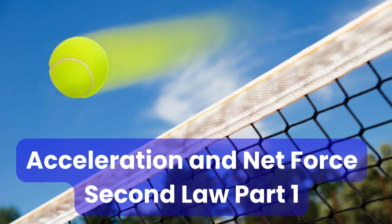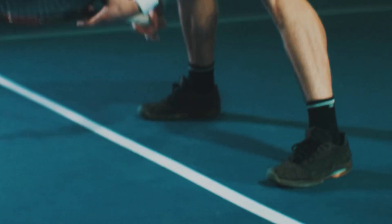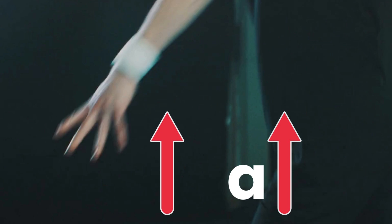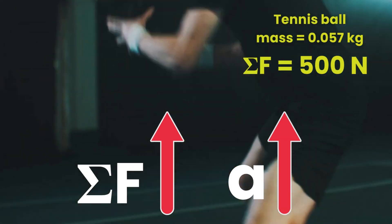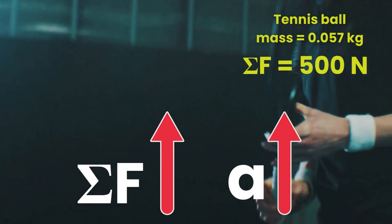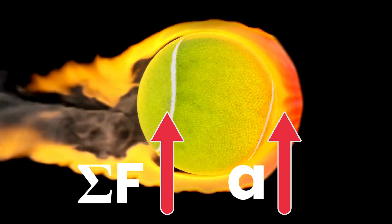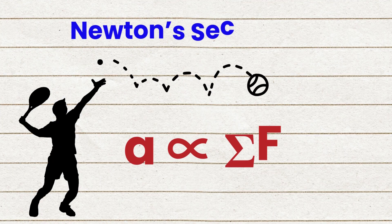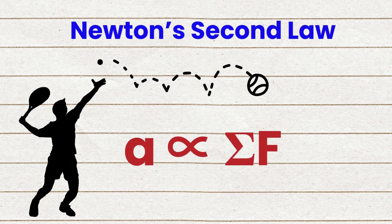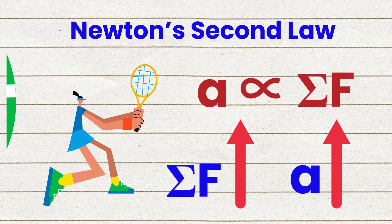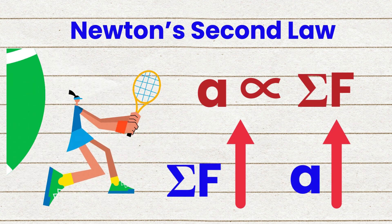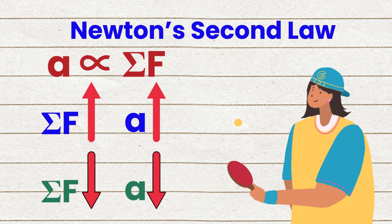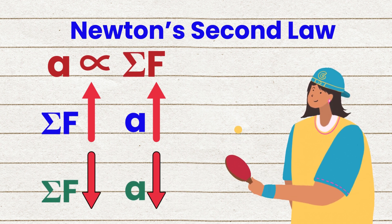Acceleration and net force — Newton's second law, part 1. Isaac is playing tennis. When he applies 500 newtons of net force, the tennis ball accelerates much more than when he hits it with a 50 newton net force. Newton's second law tells us that the acceleration of a system is directly proportional to the net force applied to it. The more net force we apply, the greater the acceleration. The less the net force we apply, the smaller the acceleration.